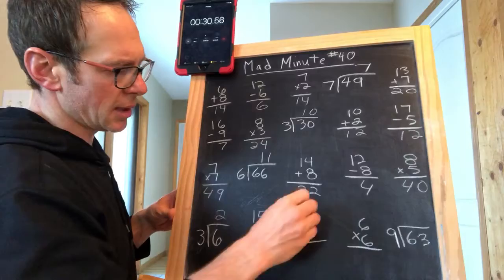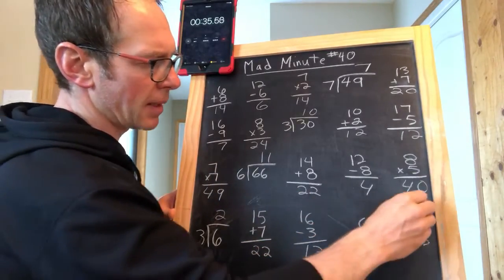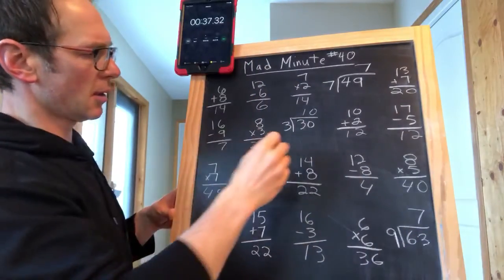16 minus 3 is 13, 6 times 6 is 36, and 63 divided by 9 is 7. Stop. 37 seconds, like that's my best of the week.